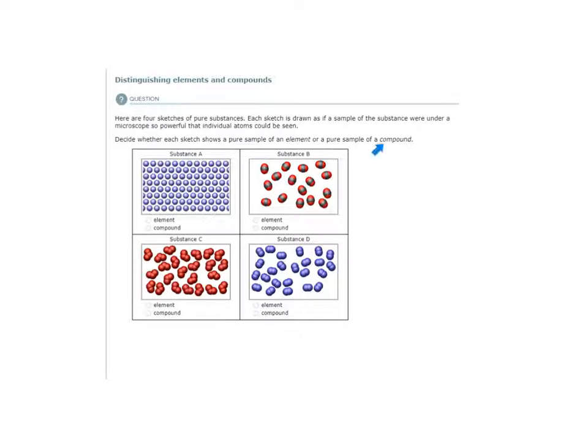Well, a compound by definition is two or more atoms of different elements. Two or more atoms of different elements. In a pure sample that is an element, we only have one type of atom present. Only one kind of atom. Here we have two or more kinds of atoms bonded together.